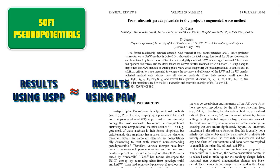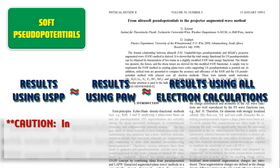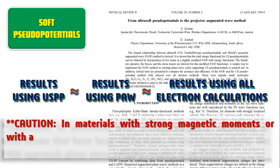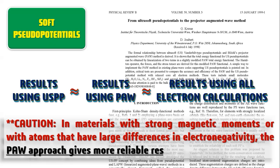And as importantly, these results are in really good agreement with all-electron calculations. Though in materials with strong magnetic moments or with atoms that have large differences in electronegativity, the PAW approach gives more reliable results than ultrasoft pseudopotentials.